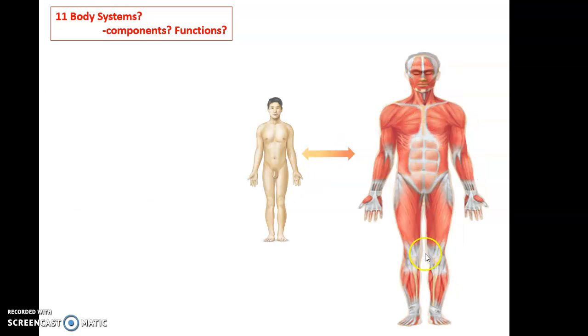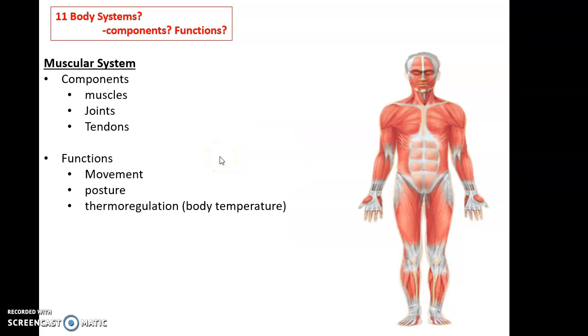Then we have this organ system. This is known as the muscular system. The muscular system is made up of the various muscles, most of which attach to bones and are able to allow for movement at joints, and the muscles are attached to those bones by tendons.